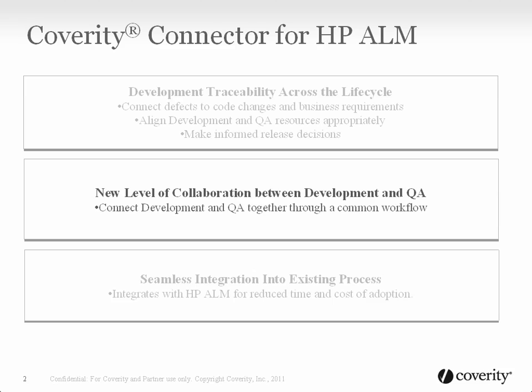This integration connects development and QA together through a common workflow and shared visibility into development-related defects and quality issues. Development management can establish KPIs and then only release to QA for testing when code quality is within acceptable levels.